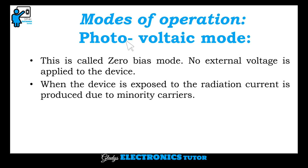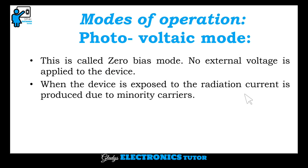The next mode is photovoltaic mode. This is called zero bias mode — no external voltage is applied to the device. When the device is exposed to radiation, current is produced due to minority carriers.